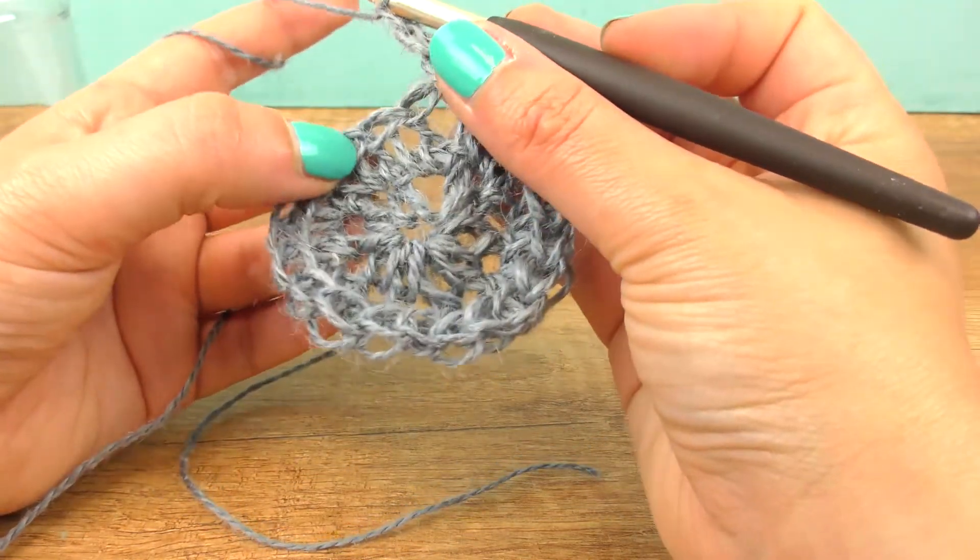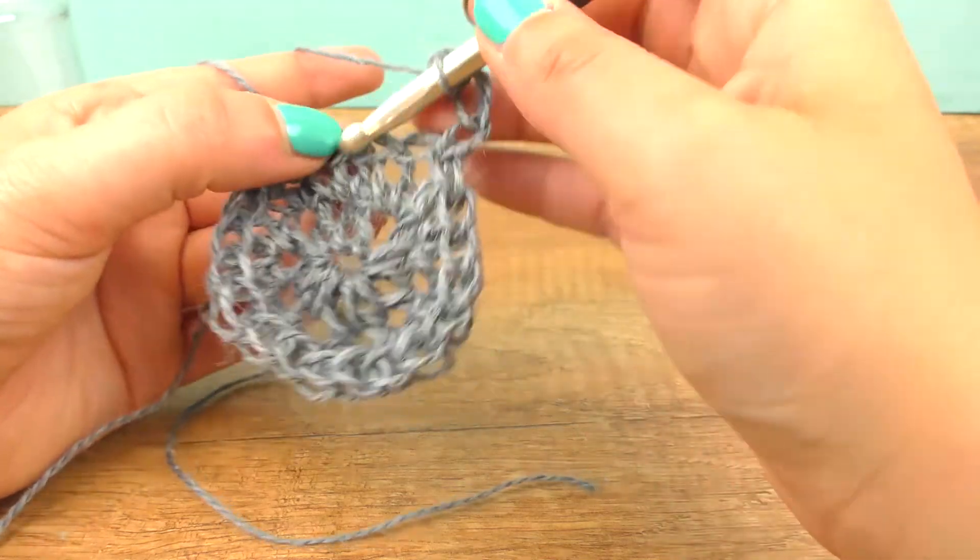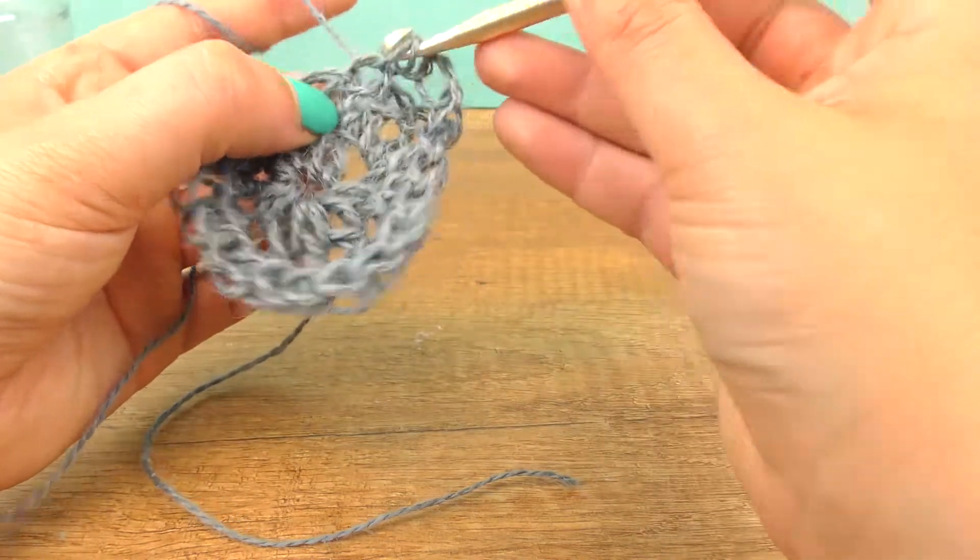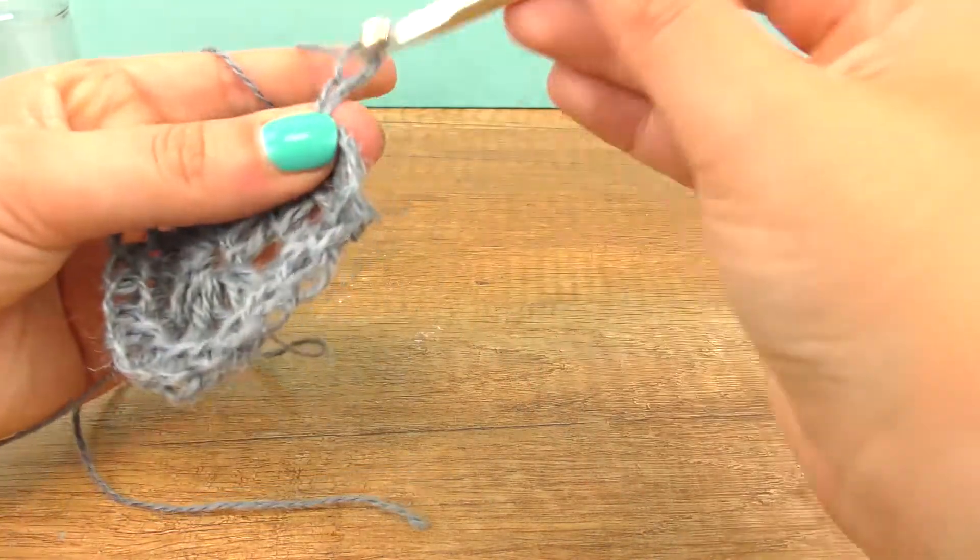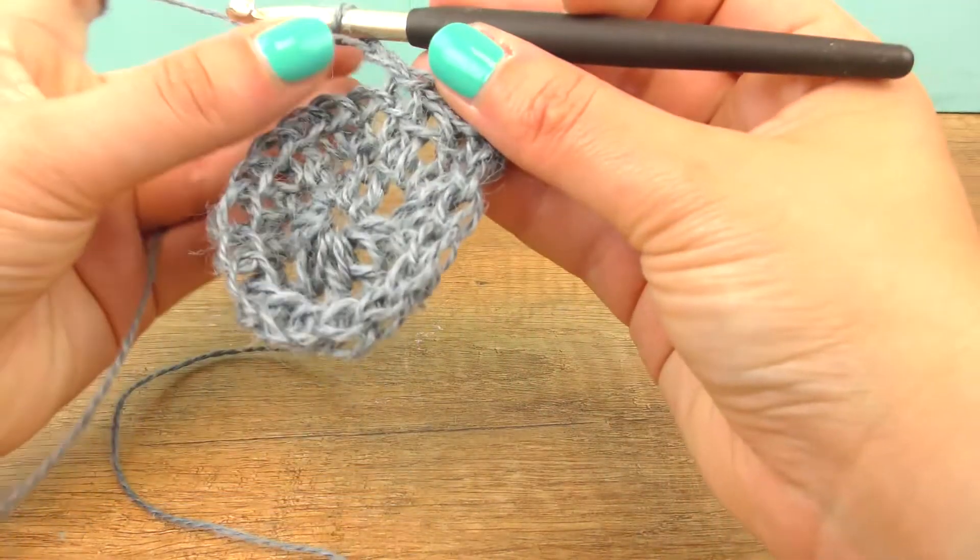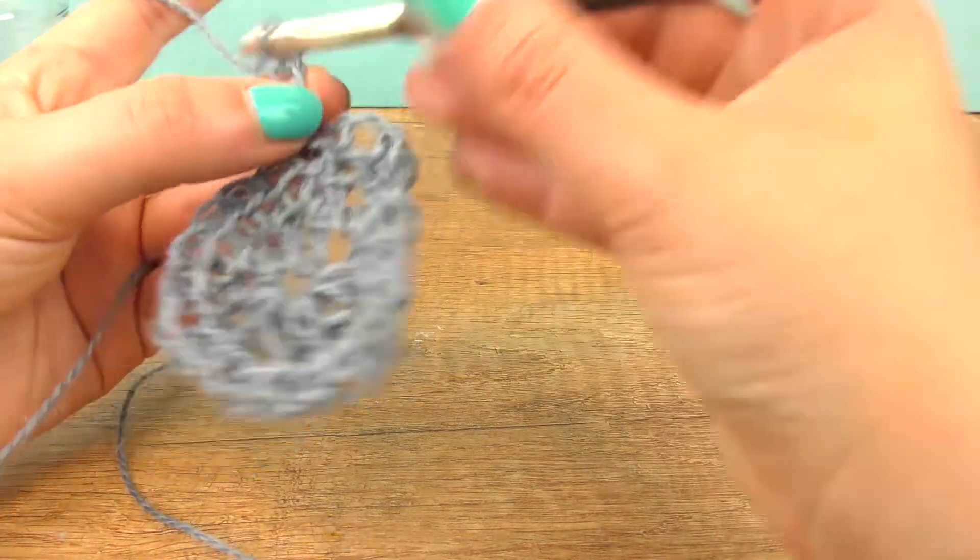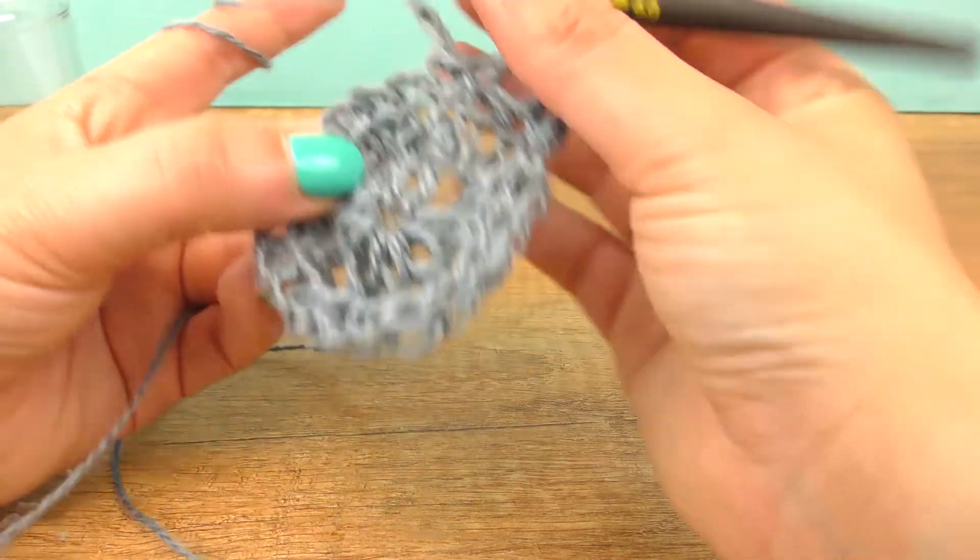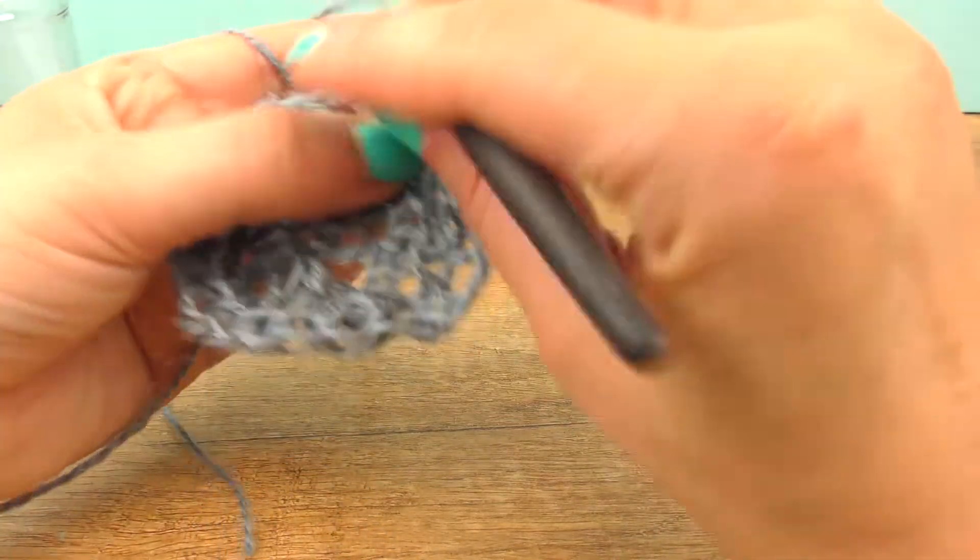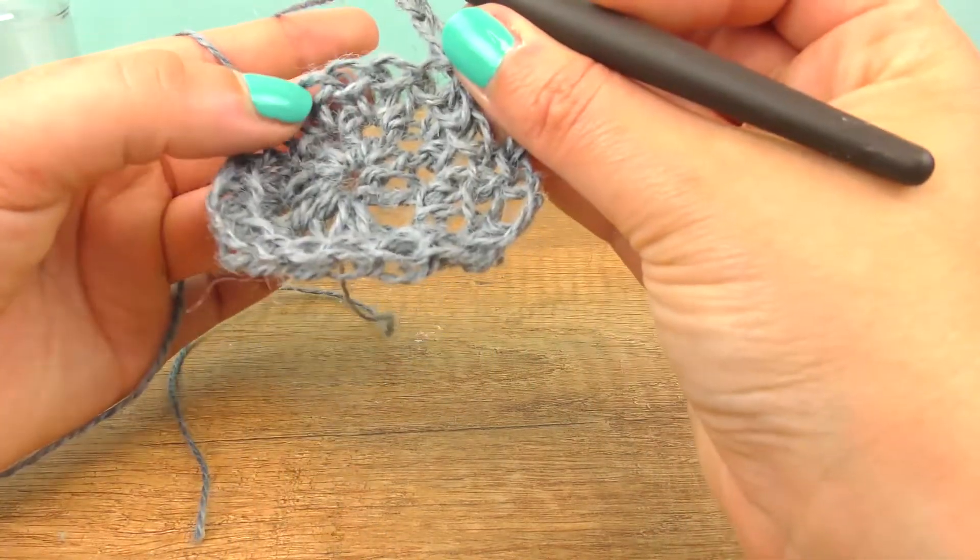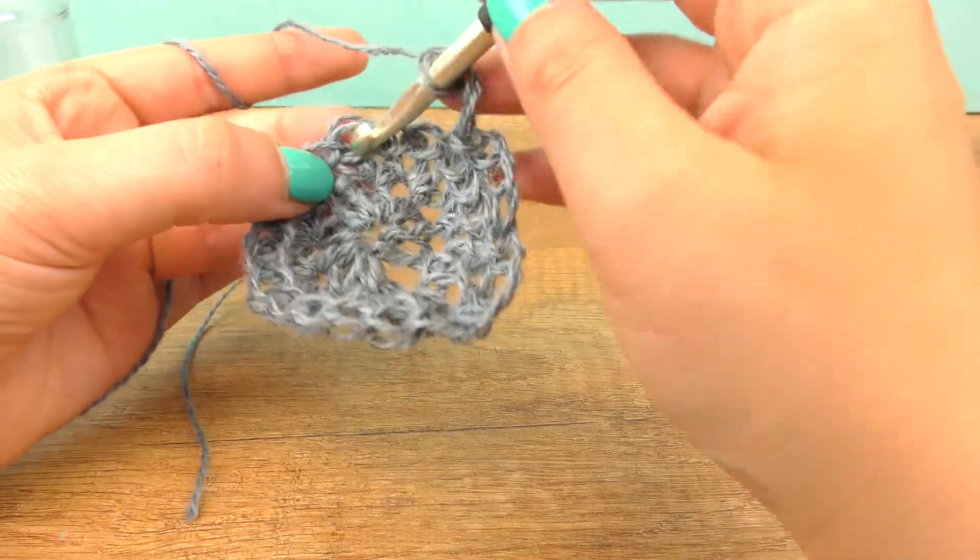Anyway, let's do three for the height. Leave two stitches out and do a slip stitch, and repeat. Three chains, skip two, slip stitch, and repeat.